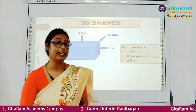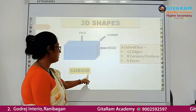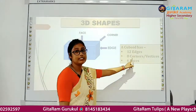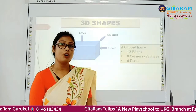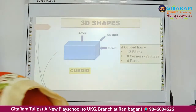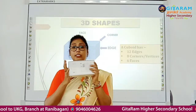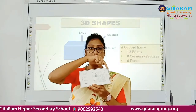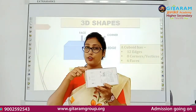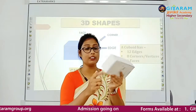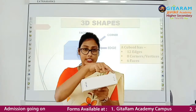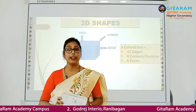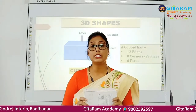Our next 3D shape is cuboid. A cuboid also has 12 edges, 6 faces, and 8 corners or vertices. Let's count — this is a cuboid. Counting edges: 1, 2, 3, 4, 5, 6, 7, 8, 9, 10, 11, 12 — so it has 12 edges. Now 6 faces.